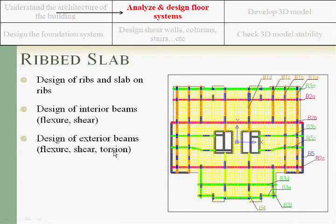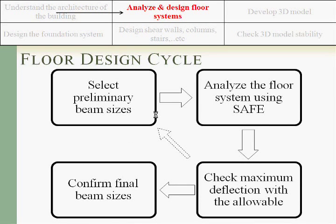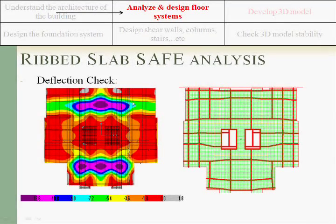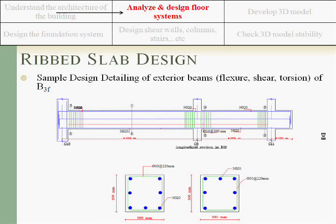We started by analyzing and designing the floor systems, beginning with the ribbed slab. It was designed with different ribs and beams. The ribs were supported by main beams — some designed for flexure and shear only, and perimeter beams also designed for torsion. The floor design cycle involved selecting preliminary beam sizes, analyzing the floor using SAFE, checking maximum deflection against allowable limits, then confirming beam sizes and proceeding to reinforcement. This is the SAFE analysis output and the ribbed slab system used. It was designed as a T-beam, with exterior beams designed to resist flexure, shear, and torsion.